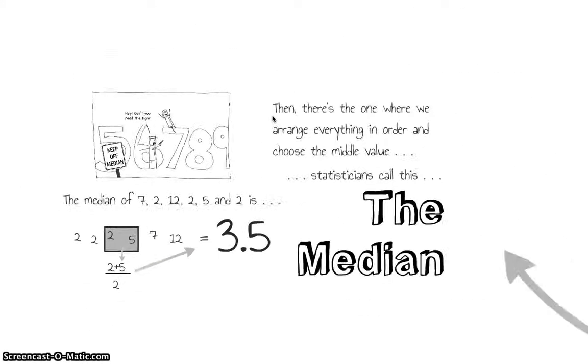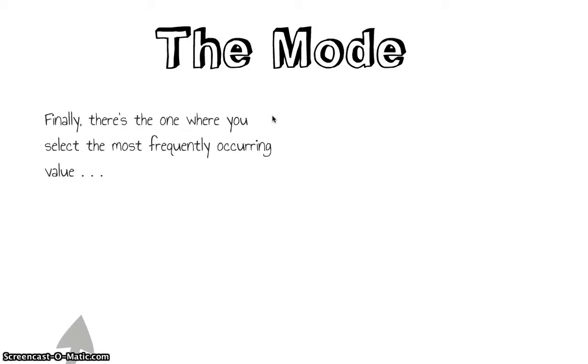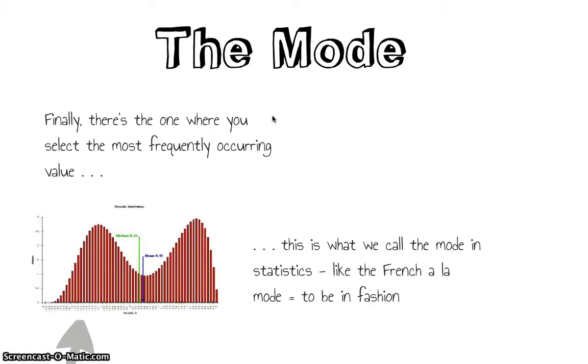And you wind up with, in this case, a median average of 3.5. There we've got the mode, and this is the one where we select the most frequently occurring value. We call it the mode, and it's a bit like the French phrase à la mode, to be in fashion.